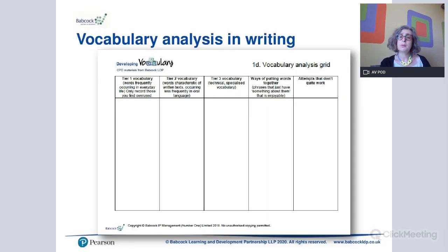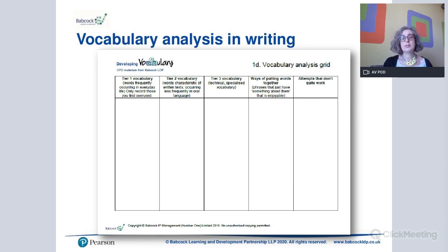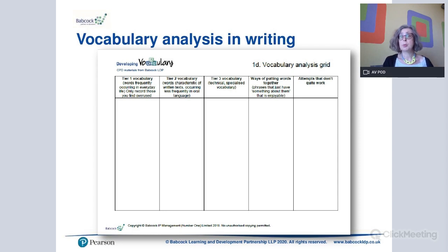A second way we've worked on with schools to analyse your vocabulary picture is to look at a diagnostic analysis in writing. We couldn't find an existing tool, so we made one. It's a very simple grid where we record what we find in a small sample of children's writing — it's up to you what that sample is — from short pieces, so we can begin to draw together a bigger picture. Before we do that, I need to talk about the idea of tiers of vocabulary, because we refer to that in the analysis.